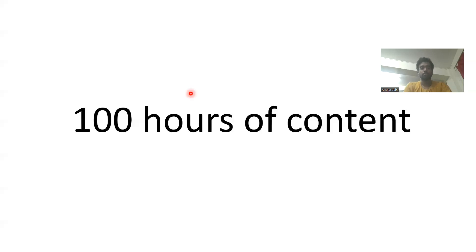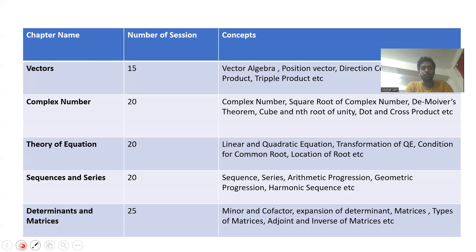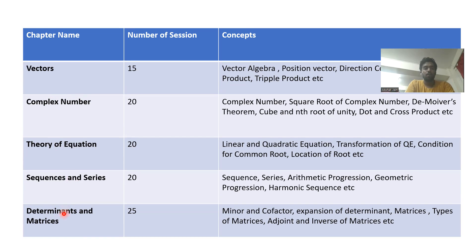Hello everyone. This is our hundred hours content — we'll be covering content going forward over two months. Here we'll be learning mathematics for JEE. We'll be covering five chapters: vectors, complex numbers, theory of equations, series and sequences, and determinants and matrices. I'm covering these chapters because they are foundational and will be useful in other subjects as well.